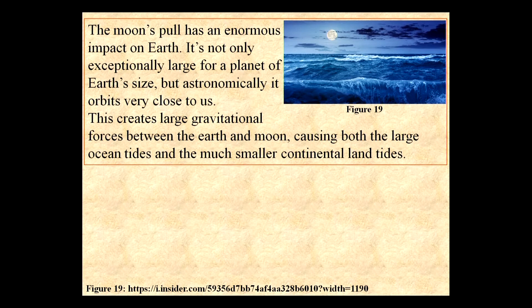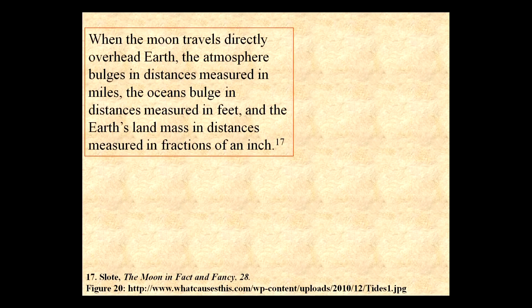The moon's pull has an enormous impact on Earth. It's not only exceptionally large for a planet of our size, but astronomically it orbits very close to us. This creates large gravitational forces between Earth and the moon, causing both the large ocean tides and the much smaller continental land tides. The land actually bulges.